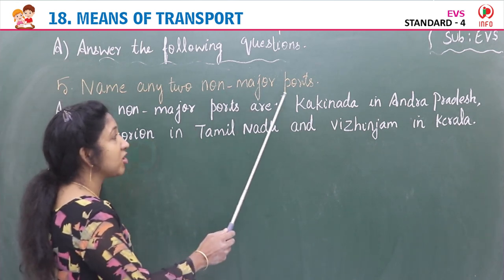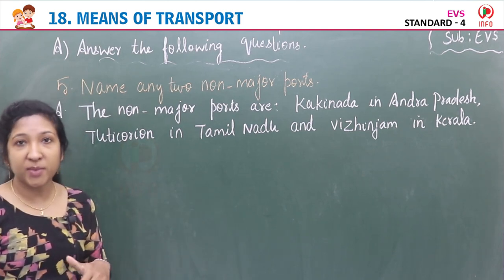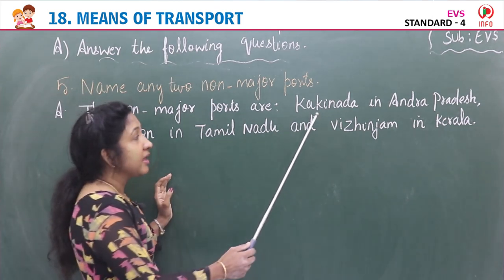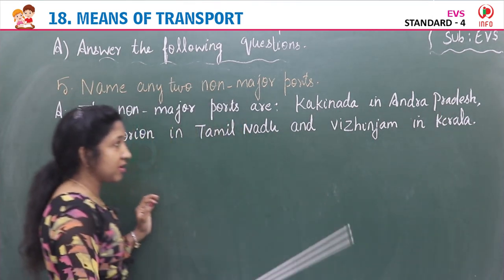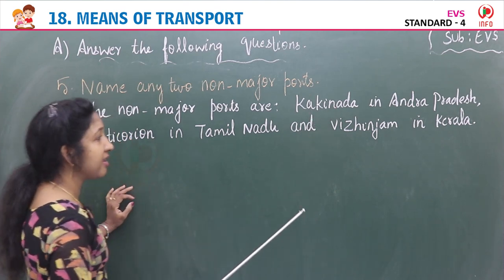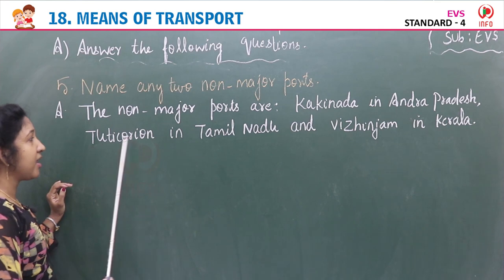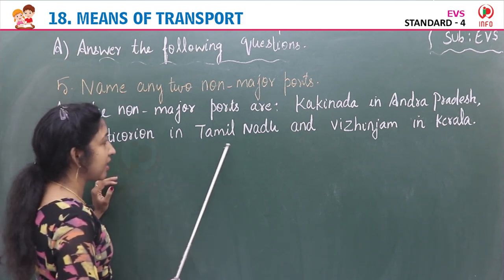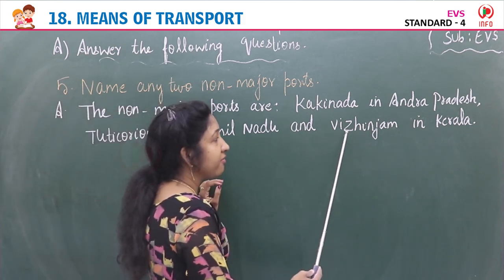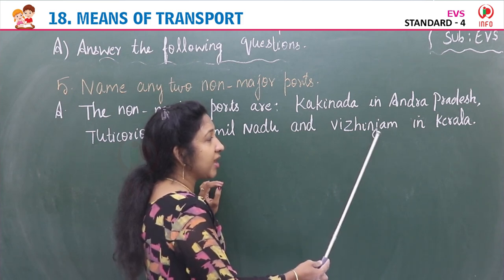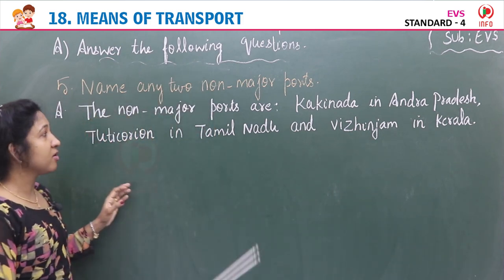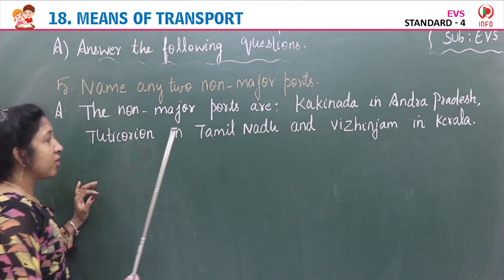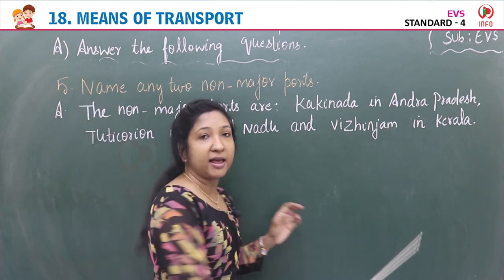Question five: Name any two non-major ports. India has major ports as well as non-major ports. The non-major ports are Kakinada in Andhra Pradesh, Tuticorin in Tamil Nadu, and Vizhinjam in Kerala. These are the non-major ports of India.